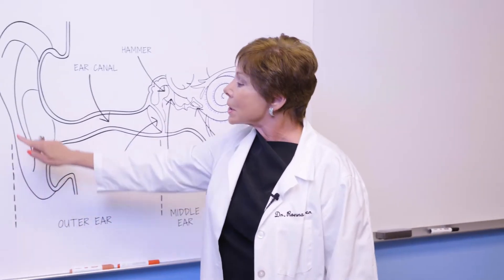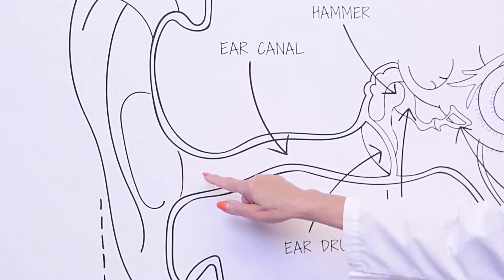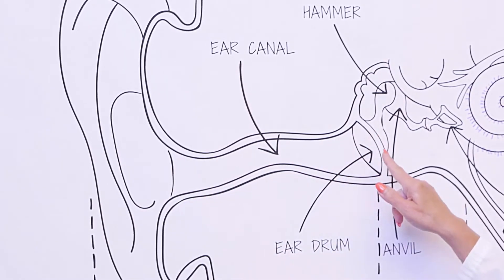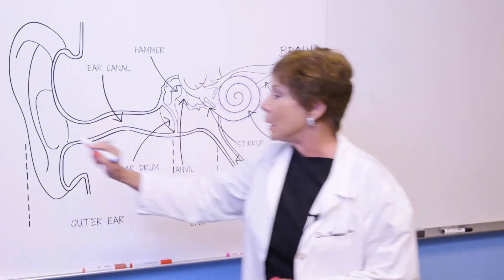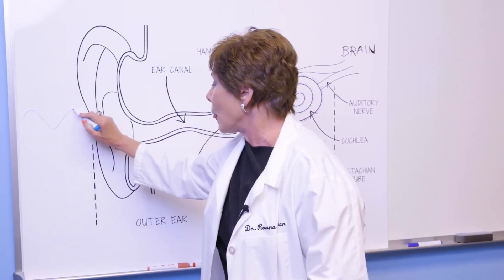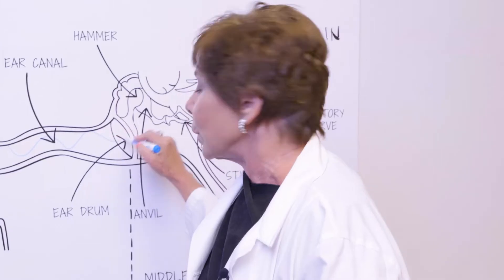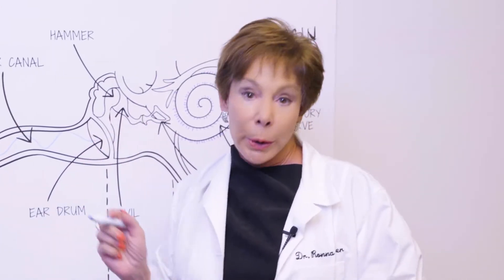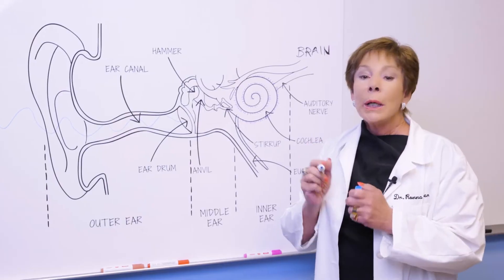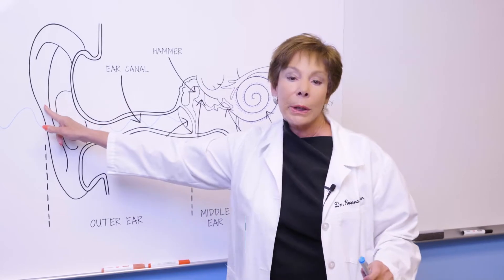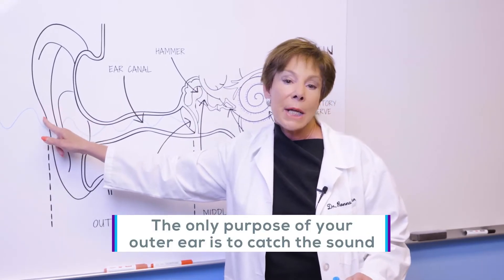Your outer ear consists of the ear itself, your ear canal, and your eardrum. All sound is vibrations that come into your ear, go down your ear canal to your eardrum. The only purpose of your outer ear is to catch the sound.